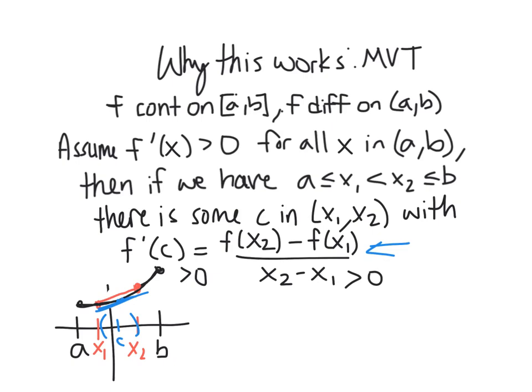And so, well, if I have a positive number is something divided by a positive number, this means my top must be greater than zero. And if f of x2 minus f of x1 is greater than zero, this means that f of x2 is greater than f of x1, namely that if we went right, we had to go up.